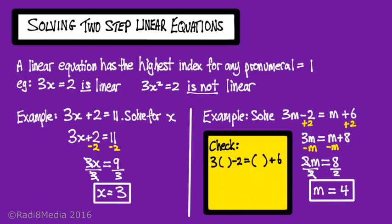So our method for substituting is replace the pronumerals with a space or a bracket. Place our value into those spaces. So I'm left with 3 times 4 is 12. It's 12 minus 2 equals 4 plus 6. 12 minus 2 is 10. So I'm left with 10 equals 10 which makes sense to me.